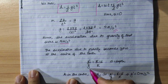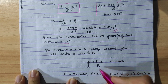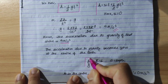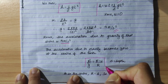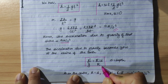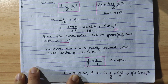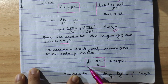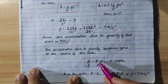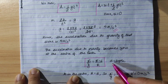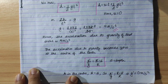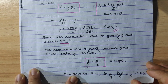g' upon g is equal to r minus d upon r. This is the explanation part. g' upon g is equal to r minus d upon r. This is the depth — the depth from the surface. This is the value of g.